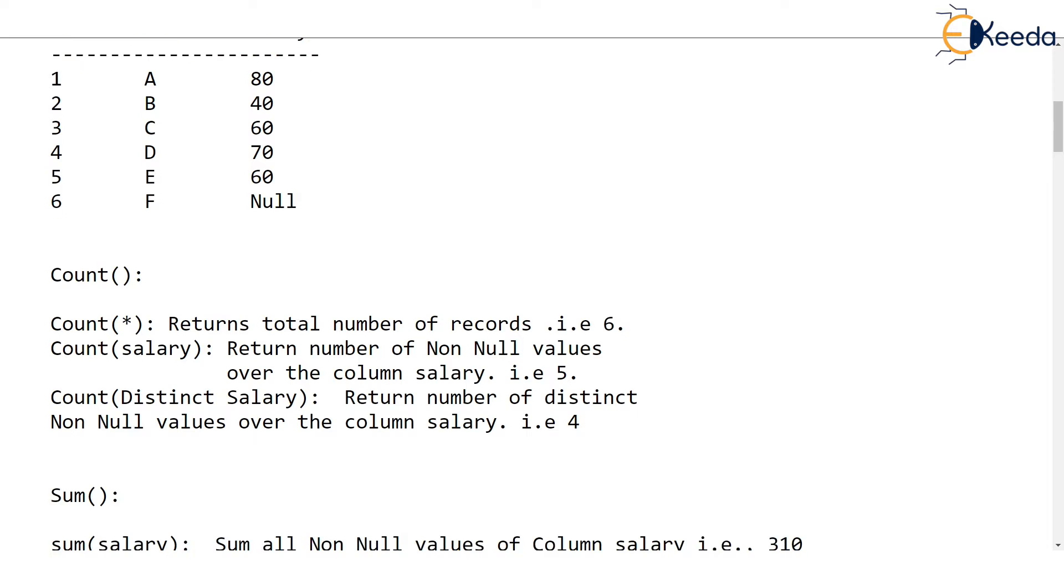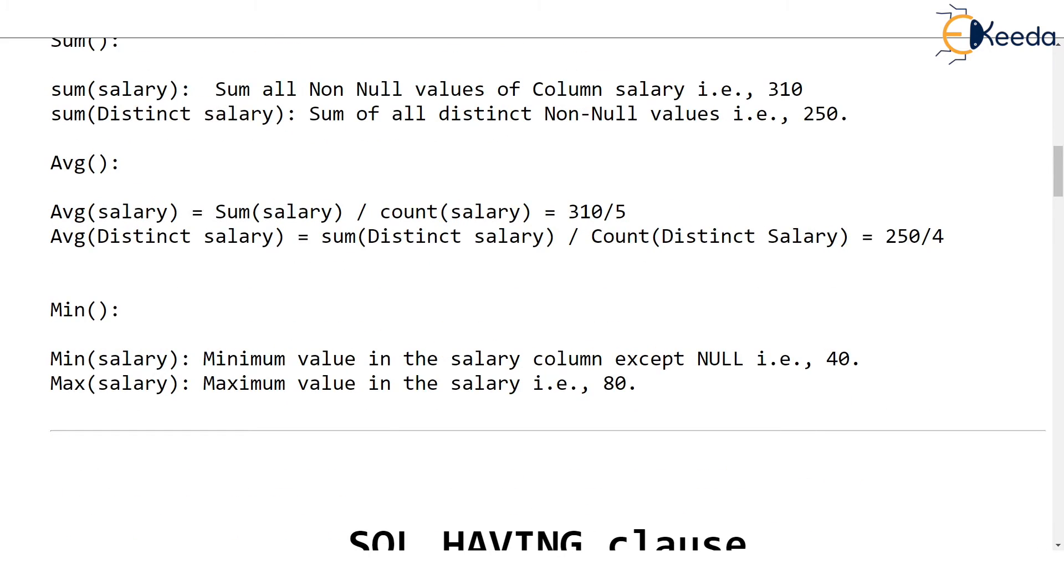The next function is average. Average is actually a function which will first find the sum and divide that sum with number of entries that it has added. When you say average of the salary, all the salaries are added with sum function and it is divided with how many salaries are there. That's average, isn't it?